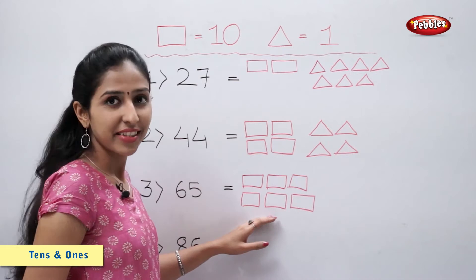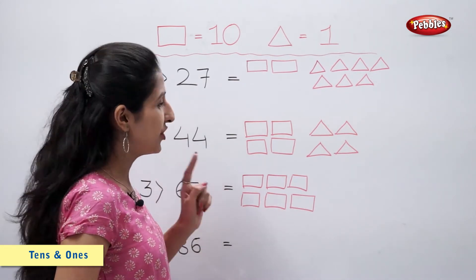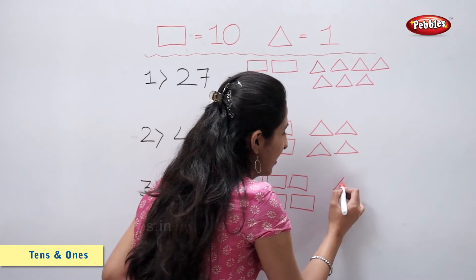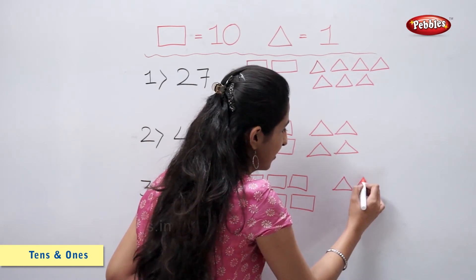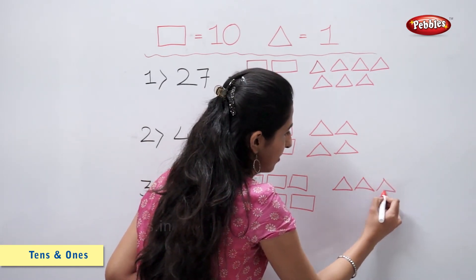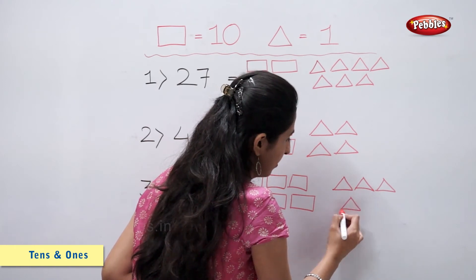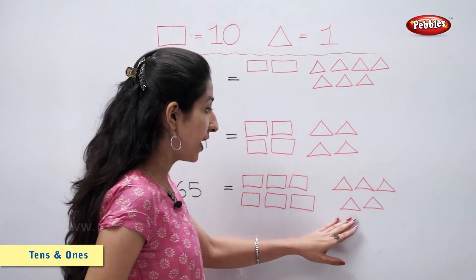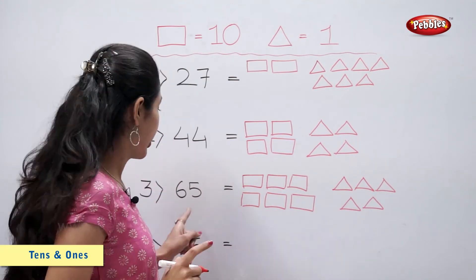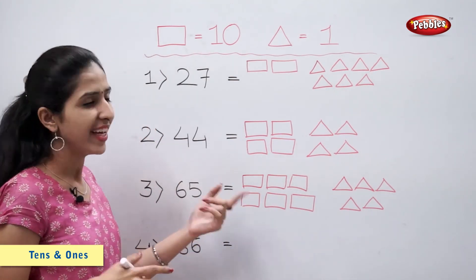6 rectangles, 5 triangles. So number 65 is ready.